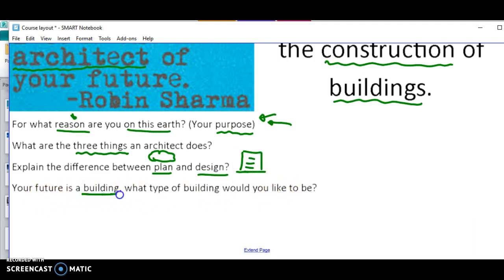Think about your future building. How do you want your future building to look? That is your future. What type of building would you like to be? Think about that and say, I want to be an architect of this building. I want to plan this. I want to design it.